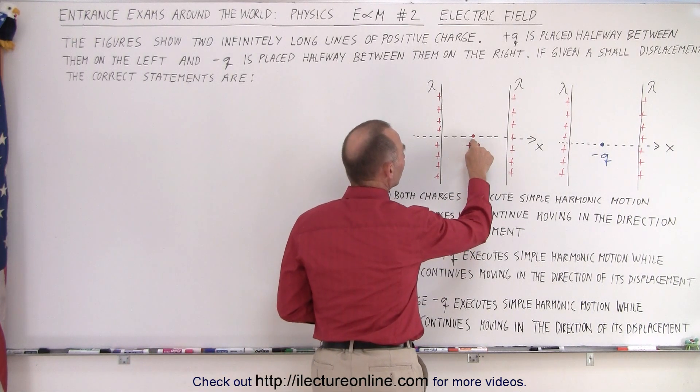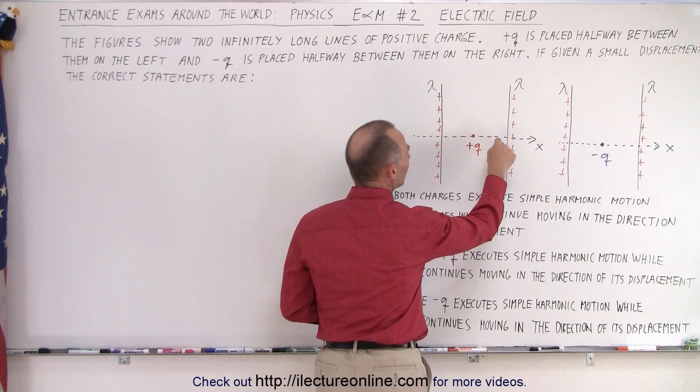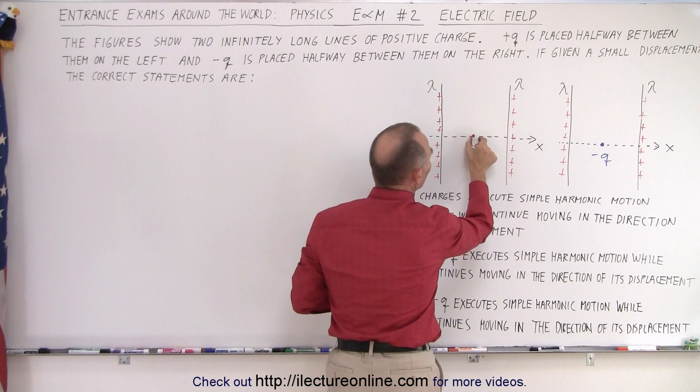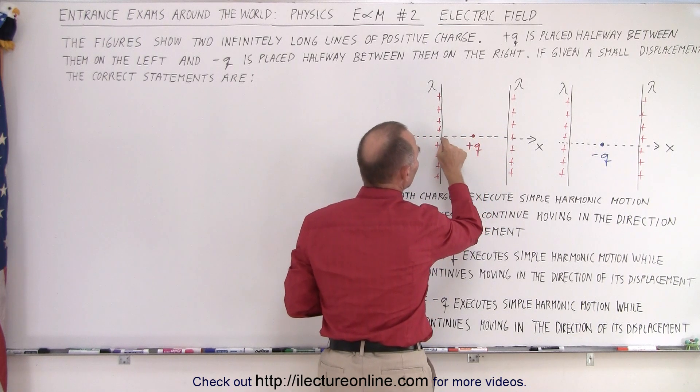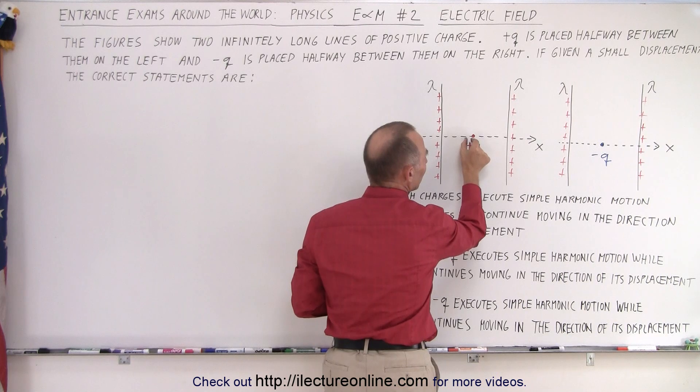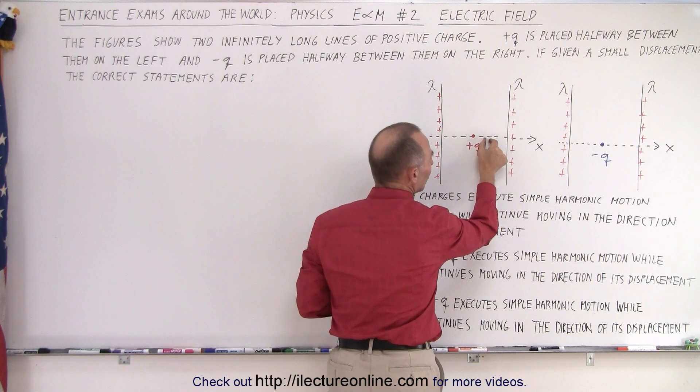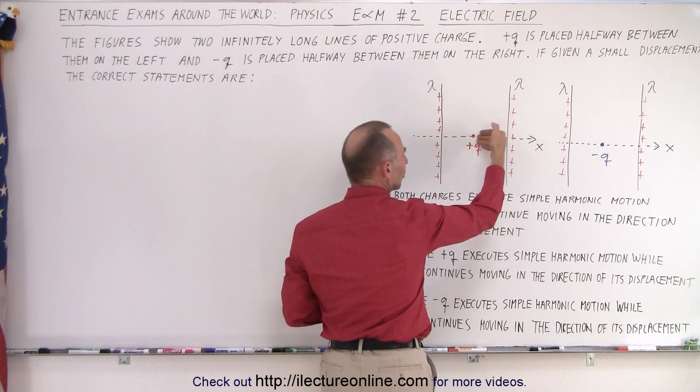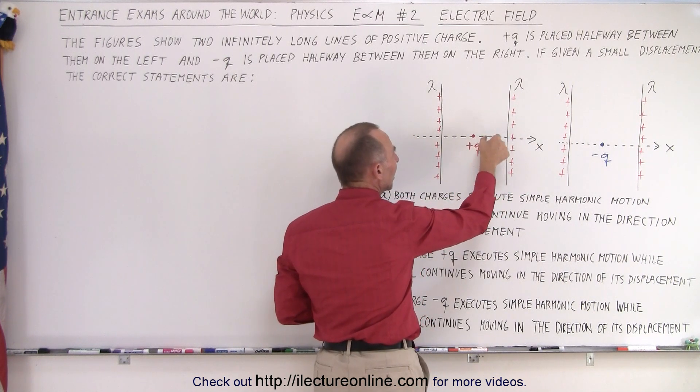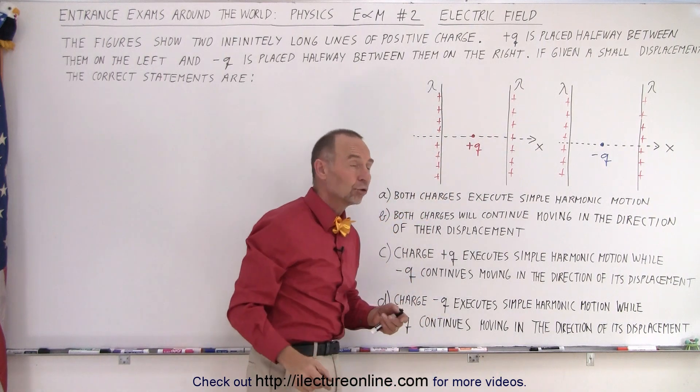Notice that this positive charge is being repelled by the left and being repelled by the right. So this force is pushing on it in both directions. If you move the charge in one direction, this force will push greater than this force and will push the charge back here. If it then overshoots and goes in the other direction, this force pushes harder than this force and it will go back. You can see that the left charge will then exhibit simple harmonic motion.